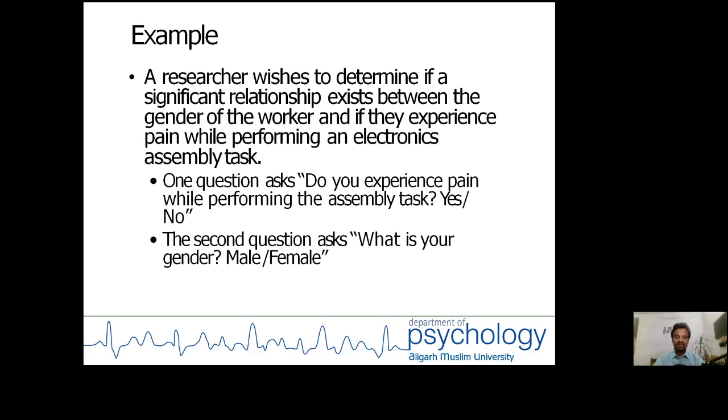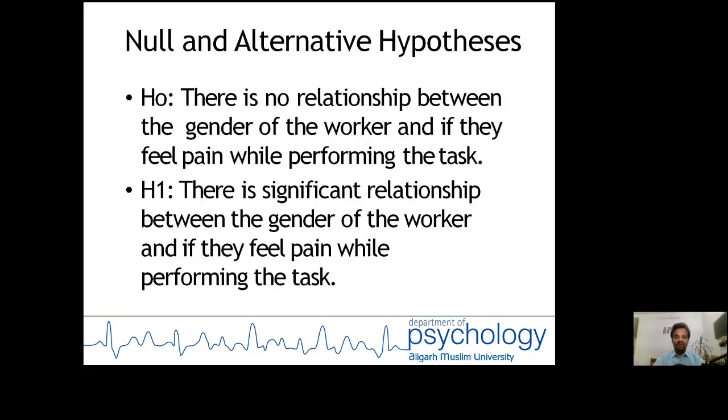If you look into the different steps while solving the non-parametric statistical technique, the first step is to frame the hypothesis. In our case, the null hypothesis is there is no relationship between the gender of the worker and if they feel pain while performing the task. The alternate hypothesis is there is significant relationship between the gender of the worker and if they feel pain while performing the task.